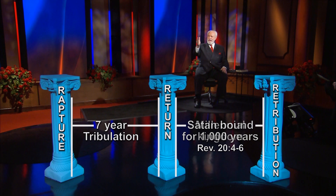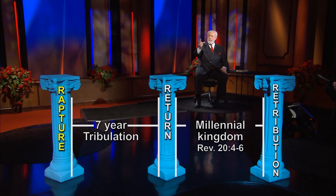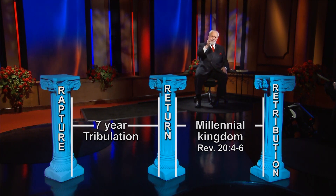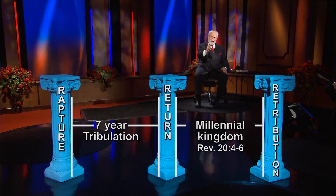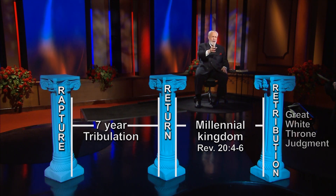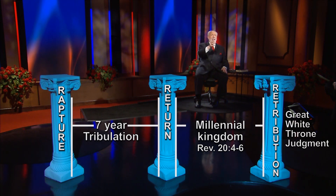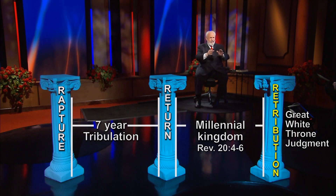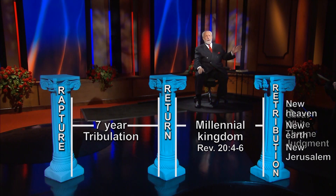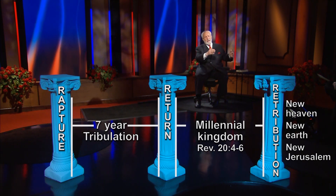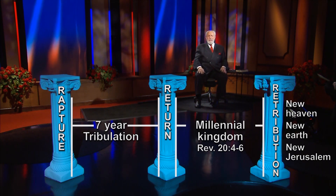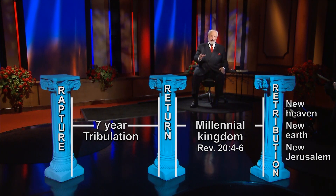And so you have then the rapture, the tribulation, the return of Christ. You have the kingdom period, or the millennium, the great white throne judgment — that is the retribution — and then after that, eternity future: new heaven, new earth, and new Jerusalem.